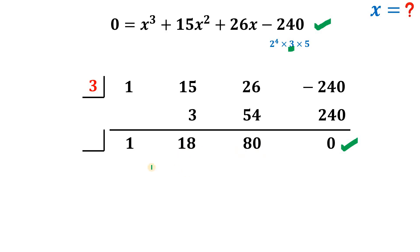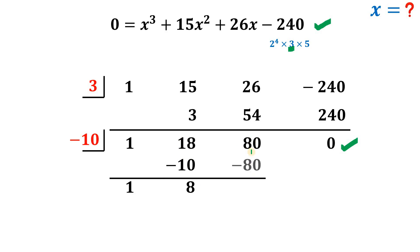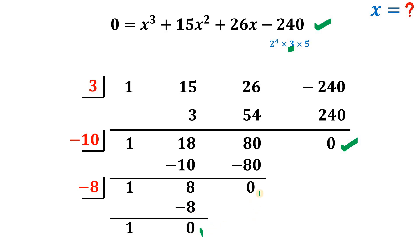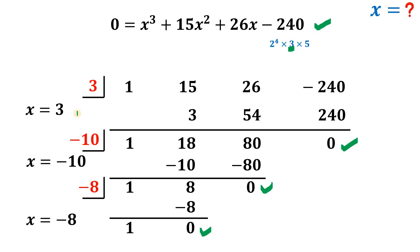Testing x = −10 on the depressed quadratic with coefficients 1, 18, 80: bring down 1; 1×(−10)=−10; 18+(−10)=8; 8×(−10)=−80; 80+(−80)=0. So x = −10 is a root. Applying synthetic division once more with the remaining 1, 8, testing x = −8: 1×(−8)=−8; 8+(−8)=0. Therefore the three roots are x = 3, x = −10, and x = −8.